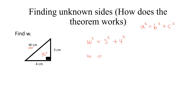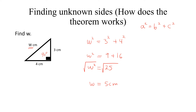So we have w squared equals 9 plus 16. When we square 3 we get 9, when we square 4 we get 16, and that equals 25. So w squared equals 25, and taking the square root of both sides, w equals 5 centimeters.